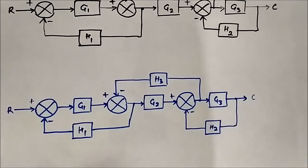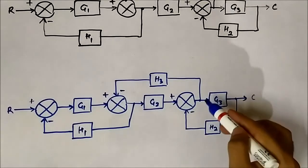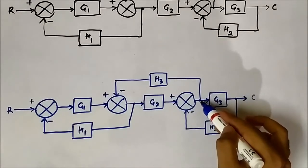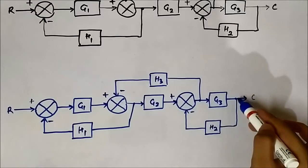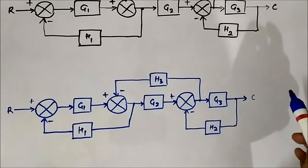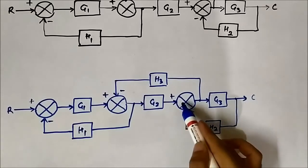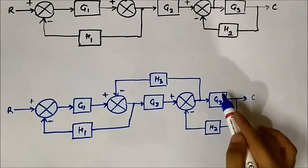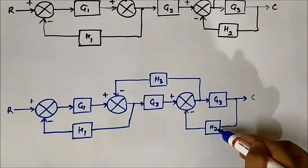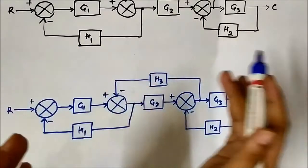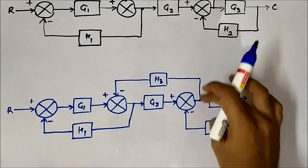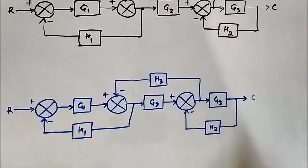So here, if you see this takeoff point — if we shift it ahead of block G3, then we will get a negative feedback path involving G3 and H2. And then we can simplify from right to left. So the first step is shifting this takeoff point here.